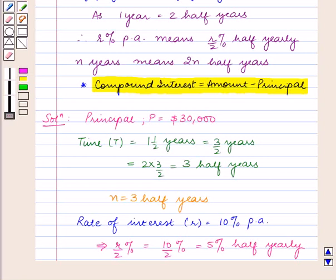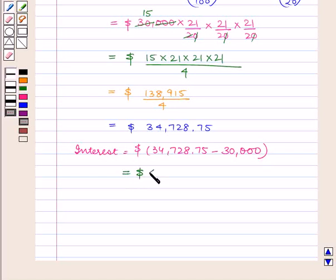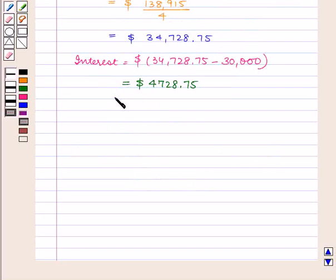So, the interest = $34,728.75 - $30,000 = $4,728.75.